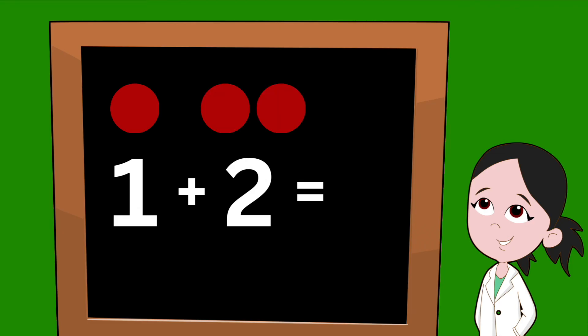Now all we have to do is count the circles. Let's count. One, two, three. There are three circles. So the answer to our addition problem is three.